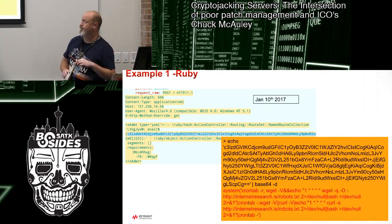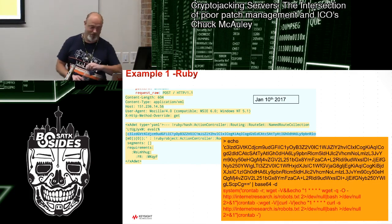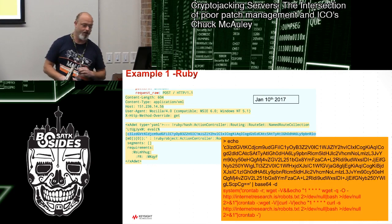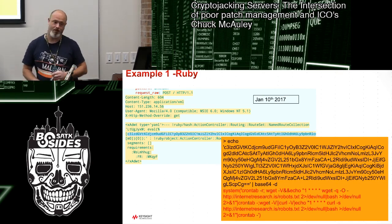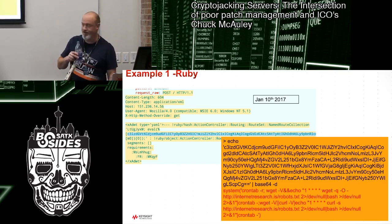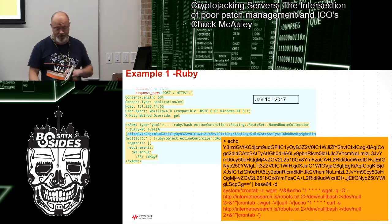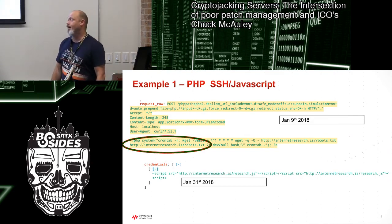This is the cesspool of the internet — a base64 object that you throw at Ruby on Rails and it runs it for you. If you base64-decode it, you'll find it basically runs crontab and reads in a script that tells it to do wget for something called robots.txt off the innocuously-named website internetresearch.is. It inserts it in cron to run once every minute. The PHP one looks like essentially the same thing — you post to a URL and the PHP script runs it for you.